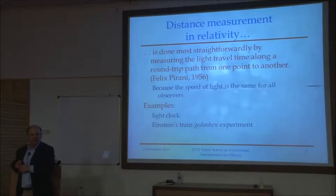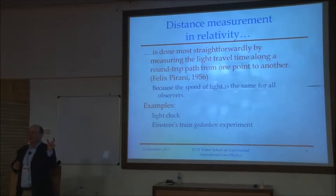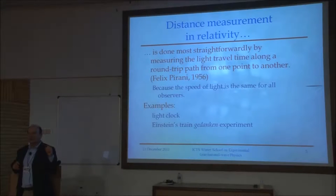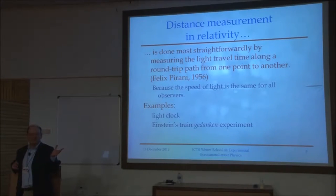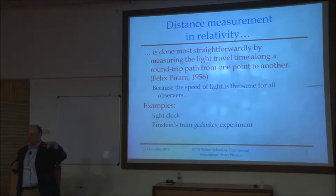Pirani's insight led directly to Ray Weiss's path to proposing interferometers as detectors. If you read what I've called the most important unpublished paper in 20th century experimental physics — Weiss's 1972 progress report — over 30 pages he lays out not only the idea of an interferometric detector of gravitational waves, but makes a list of almost every one of those noise sources that Rana had on his graph. I still sit in amazement that sitting at his desk, Ray was able to predict the future course of the struggle of building these machines.